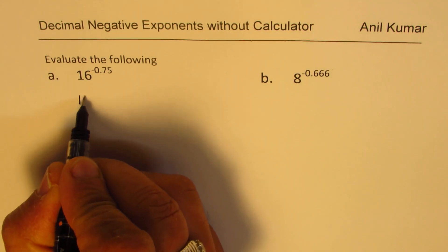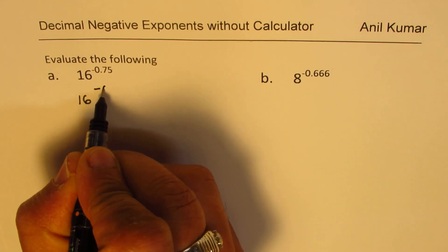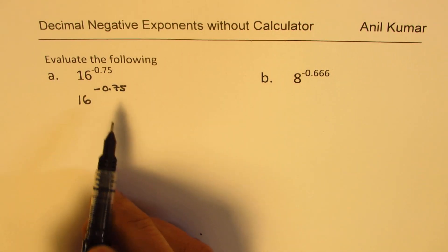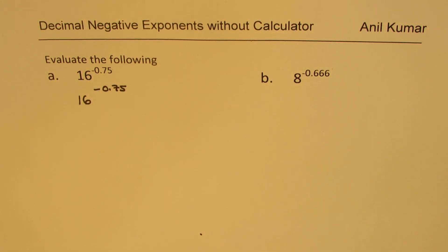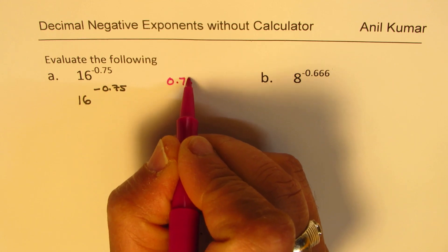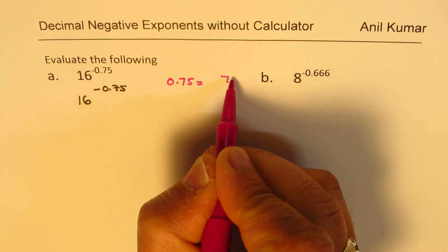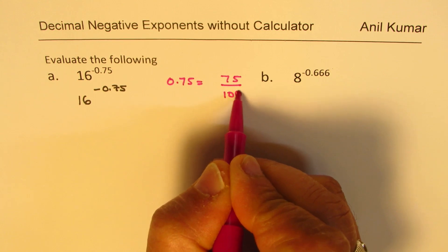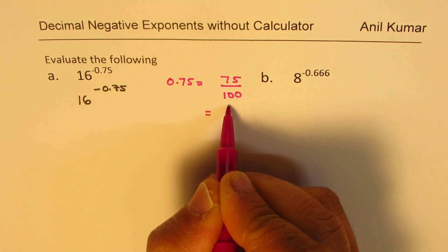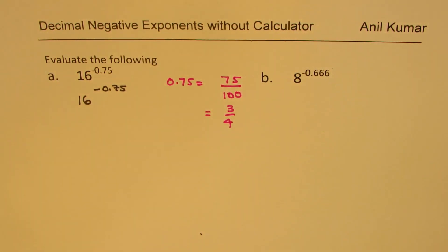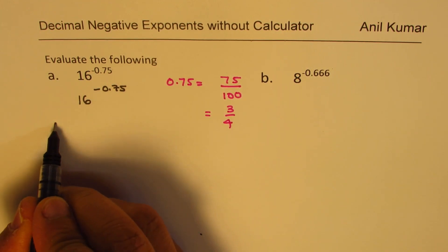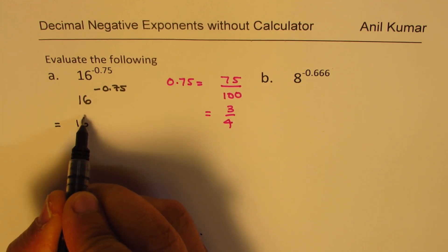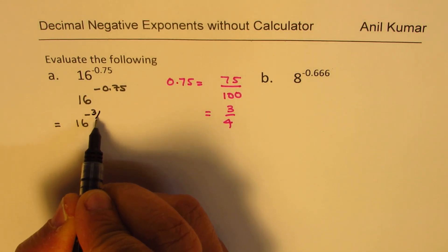So let's first do 16 to the power of minus 0.75. Now, what is 0.75 equal to? We need to understand that first. When I say 0.75, it really means 75 over 100, which is 3 over 4. So we could write 16 to the power of minus 0.75 as equal to 16 to the power of minus 3 over 4.